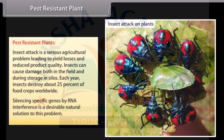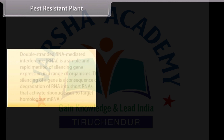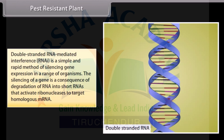Silencing specific genes by RNA interference is a desirable natural solution to this problem. Double-stranded RNA-mediated interference, or RNAi, is a simple and rapid method of silencing gene expression in a range of organisms. The silencing of a gene is a consequence of degradation of RNA into short RNAs that activate ribonucleases to target homologous mRNA.